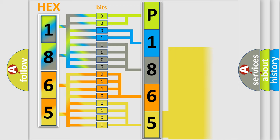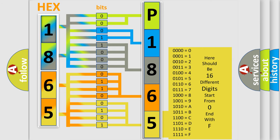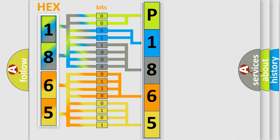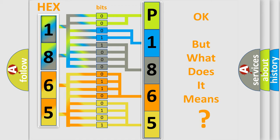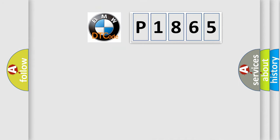A single byte conceals 256 possible combinations. We now know in what way the diagnostic tool translates the received information into a more comprehensible format. The number itself does not make sense to us if we cannot assign information about what it actually expresses. So, what does the diagnostic trouble code P1865 interpret specifically for BMW car manufacturers?